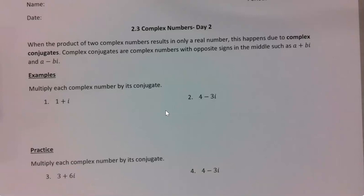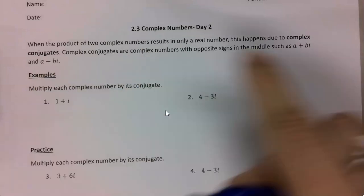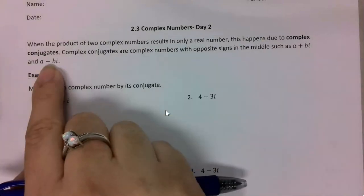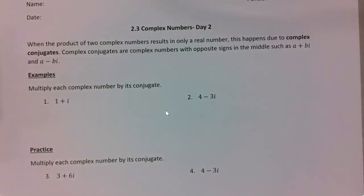Today we are talking about complex conjugates. These are used whenever we have fractions with complex numbers on the denominator — we always want to turn them into real numbers. Conjugates are just changing the middle sign: if I have a positive sign in the middle, I change it to a negative and vice versa. This is used to get a real number on the denominator so I can simplify my fractions.